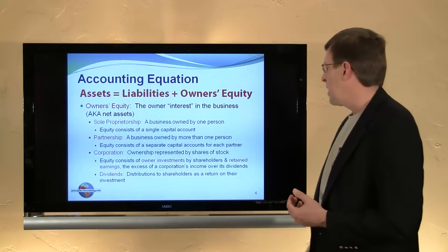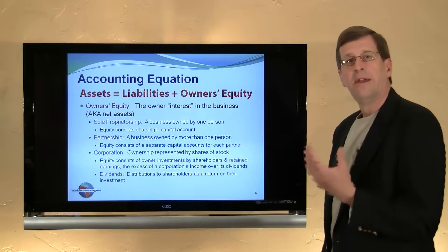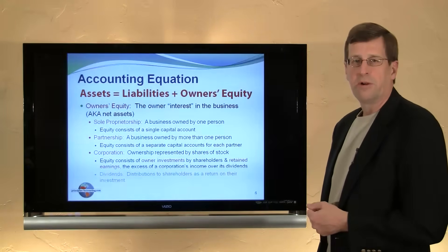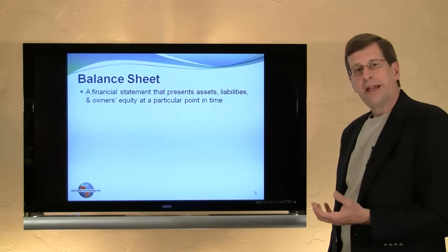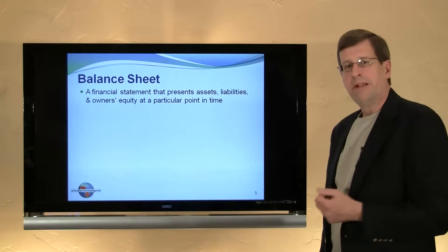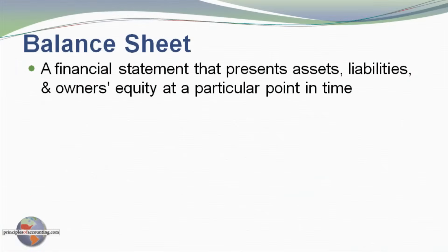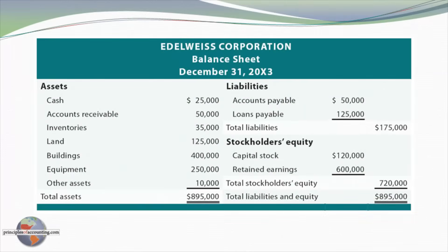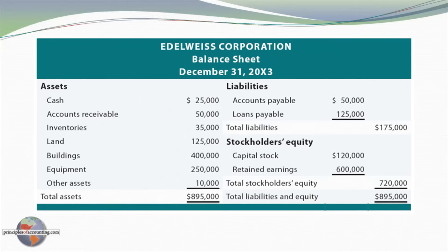Those payments out to shareholders are frequently termed dividends — the distributions of earnings from the company to the shareholders of the corporation. And so the fundamental accounting equation, assets equal liabilities plus owner's equity, is visible in a financial statement that you'll become very familiar with. That financial statement is termed the balance sheet or statement of financial position. It presents at a particular point in time — on the balance sheet date, in this case December 31, 20X3 — the assets of the company, in this case displayed on the left, with a total of $895,000, the sum total of all the individual assets.